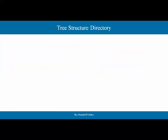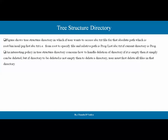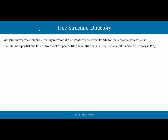This figure shows the structure in which users want to access abc.text. The absolute path is: root, bin, mail, proc, list — that is, from root to the specific file name. And the relative path would be: proc, list, abc.text.